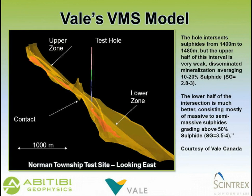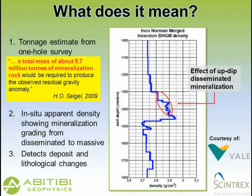This is what the model of the ore body looked like. The top half is more disseminated and the bottom half is massive to semi-massive, with a higher specific gravity. What you get out of that profile is a tonnage estimate. This is a tonnage estimate from a single hole survey, calculated by Dr. Siegel to be about 5.7 million tons. That's in the right ballpark, as the deposit was estimated to be somewhere between 9 and 10 million tons.